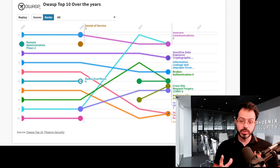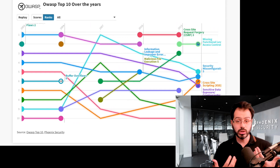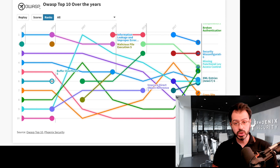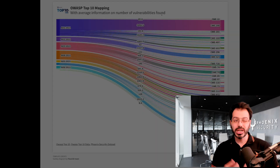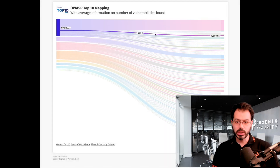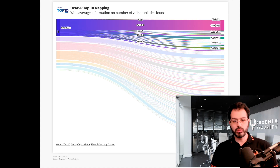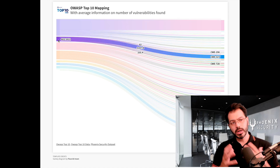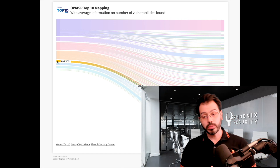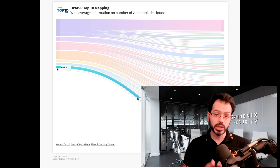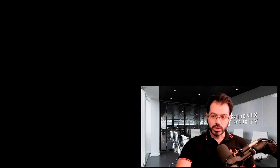OWASP Top 10 has been a pillar of our industry in terms of prioritization score, and CWE, in terms of methodology of attack — a little bit broader than just OWASP — have been two key pillars of information to actually prioritize and identify what is an actual vulnerability.